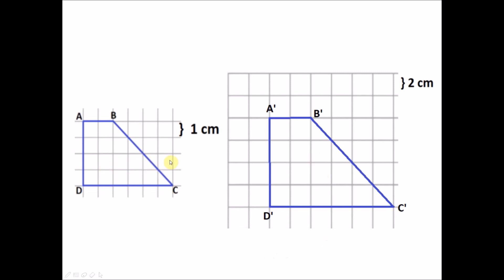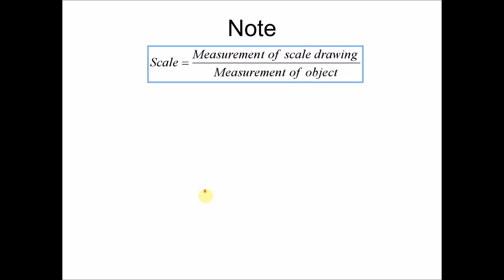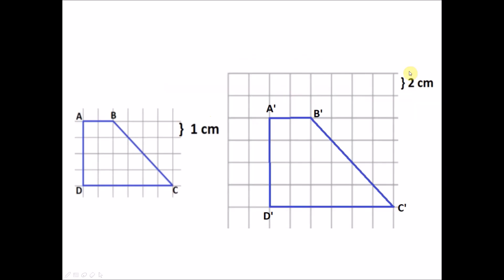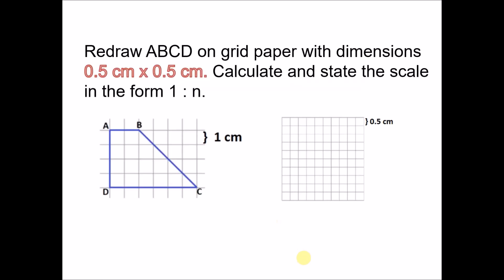Note that we can also find the scale another way. The scale also equals the grid size of the scale drawing over the grid size of the object. The grid size of our scale drawing is 2 cm and the grid size of the object is 1 cm, so scale = 2/1. Dividing both by 2 gives 1 is to 1/2 — the same answer.